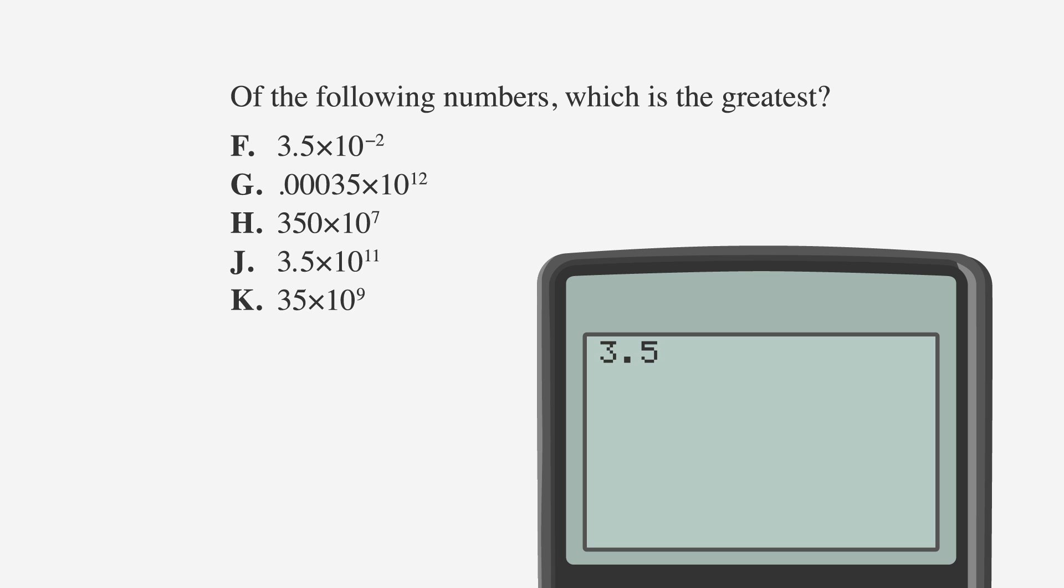We'll put these answer choices into our calculator and see which number is the biggest. Inputting 3.5 times 10 to the negative 2 into our calculator, we find the value to be 0.035. Let's make a note of that to the right of choice F. Choice G is 0.00035 times 10 to the 12th. In our calculator, that's 35 followed by 7 zeros. Write that one down next to answer choice G. That's bigger than choice F, so let's cross out F.